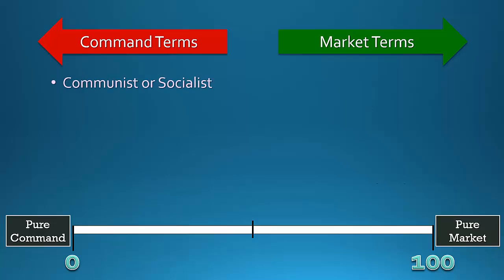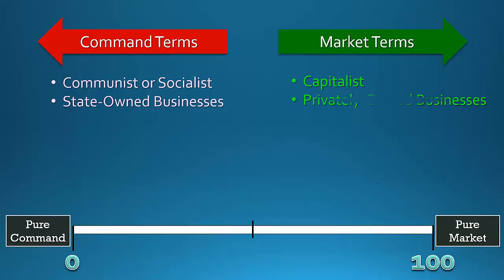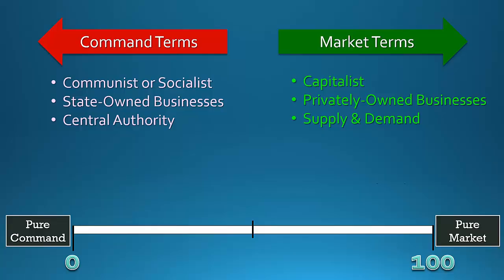If you see a country referred to as communist or socialist, it's probably going to be on the command side. On the other hand, a capitalist country is going to be on the market side. If you hear that businesses are state-owned, that's a command economy idea; privately owned businesses tend to be market economy. If wages and prices are set by a centralized authority, that's probably a command economy, whereas if prices and wages are set by supply and demand, that's a market economy.